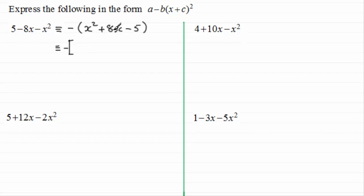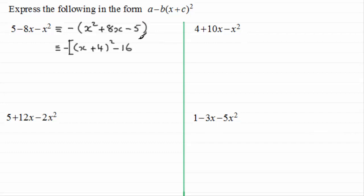And we complete the square in the normal way. For something like this, we just put a bracket down with a square out there, put x at the front and halve the coefficient of x — so that's half of plus 8 which is plus 4. When you square this out you're going to get x squared, then 4x plus another 4x which is 8x, and then 4 squared which is 16. There is no 16 in here so we just take off 16, and we put back the minus 5.